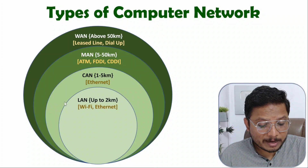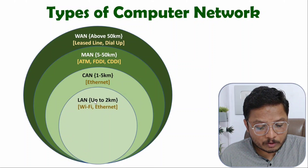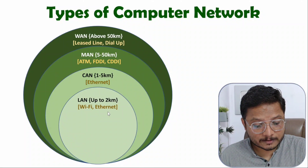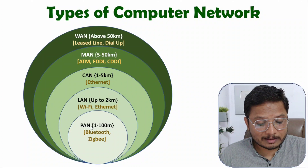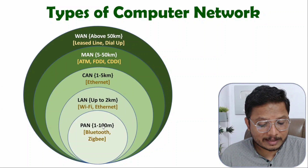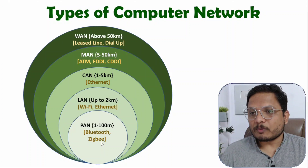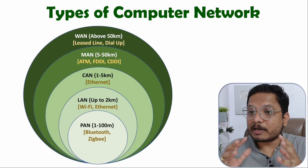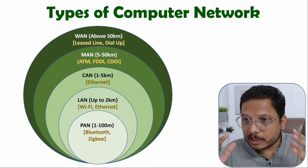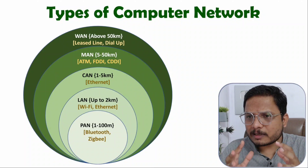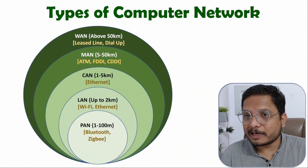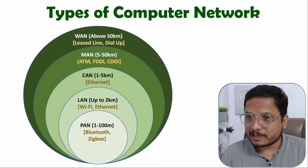Local Area Network has a distance of up to 2 km and can be implemented using Wi-Fi and Ethernet technologies. Personal Area Network has a range up to 100 meters, implemented using Bluetooth and Zigbee technology. So based on the distance and the technologies, various computer networks are implemented around the globe. I will now explain all these types of computer networks along with various parameters for more clarity.